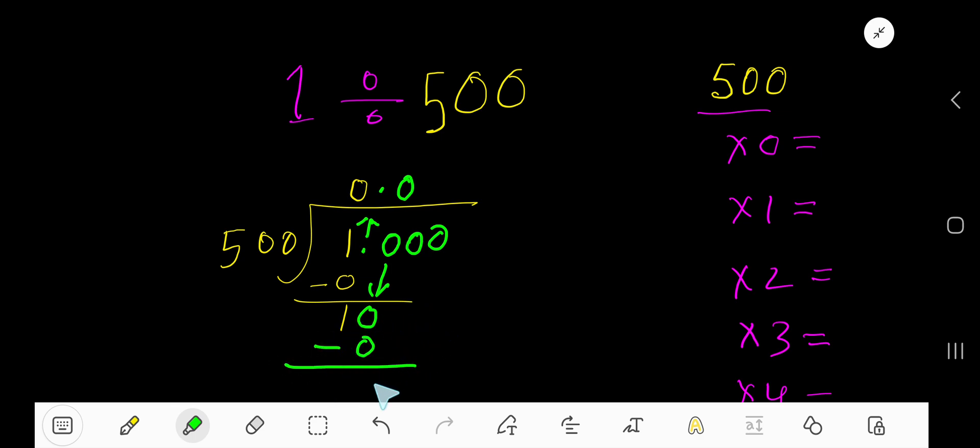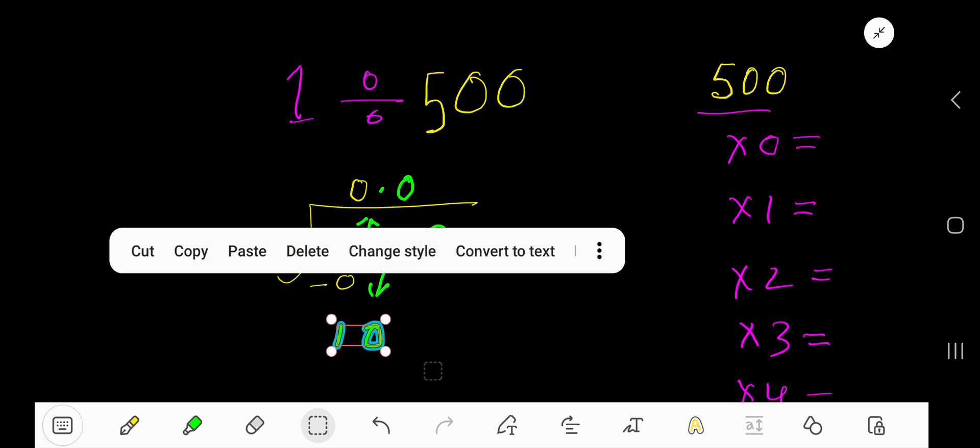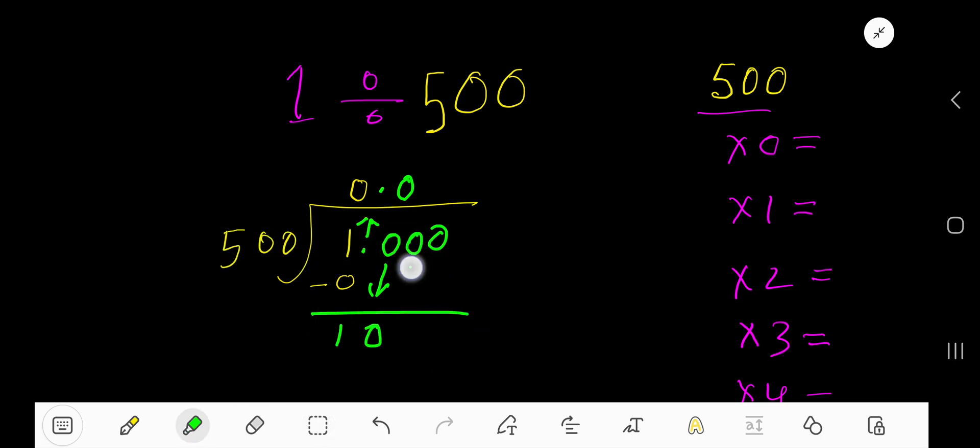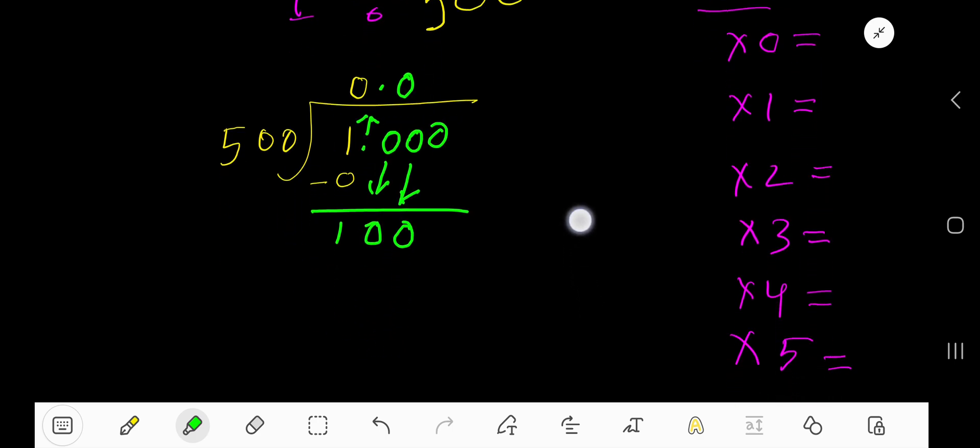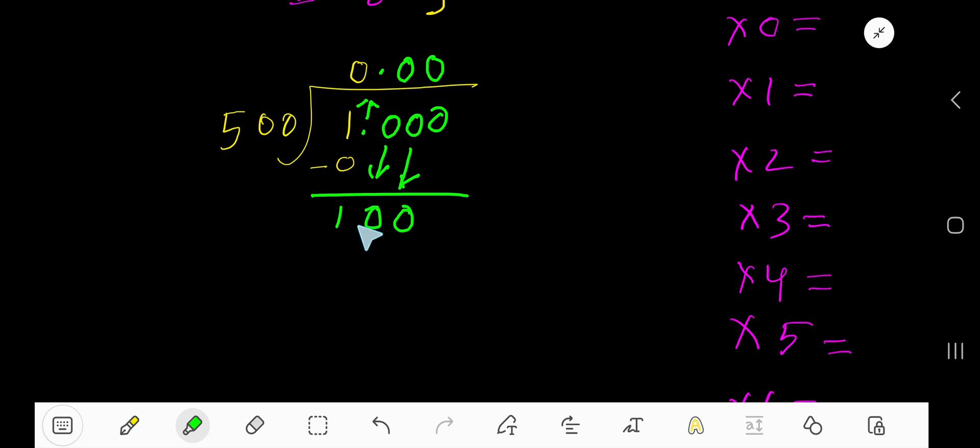Okay, now take this 10 here. Bring down this 0. Now 500 goes into 100 how many times? 0 times because 100 is less than 500. 0 times 5 gives you 0.